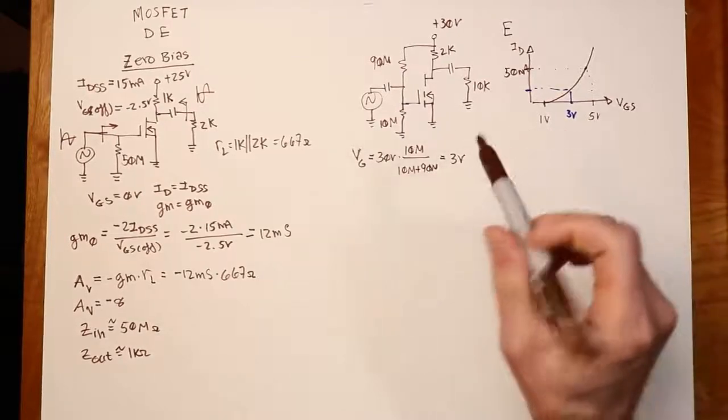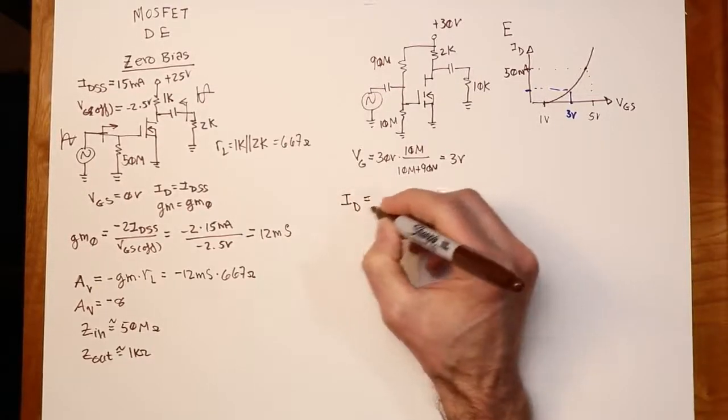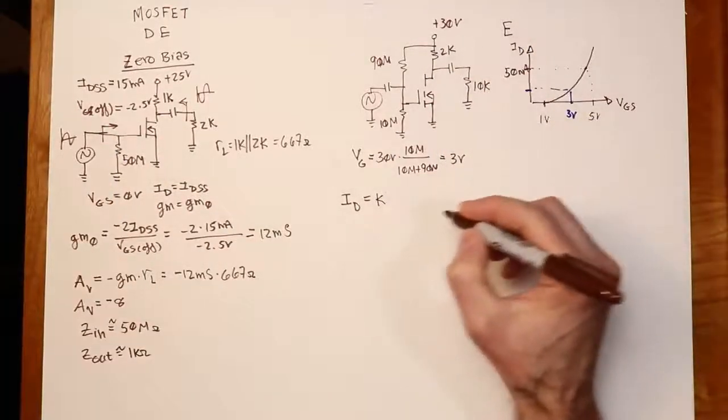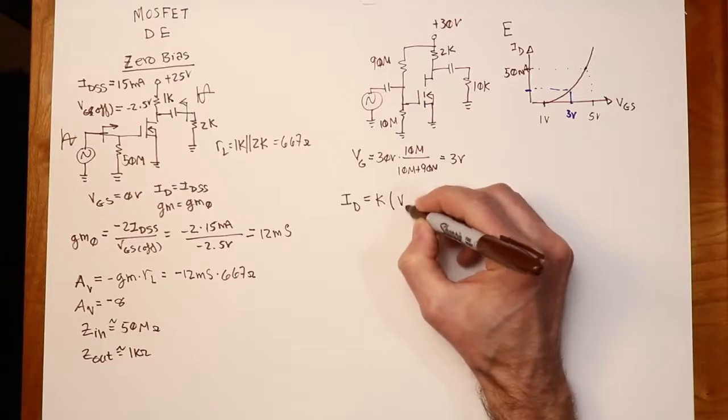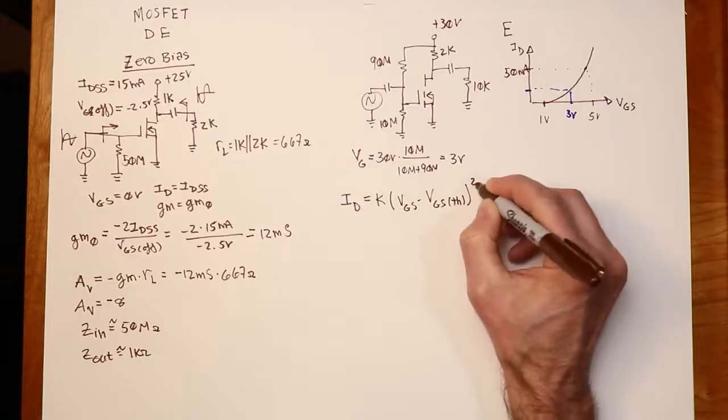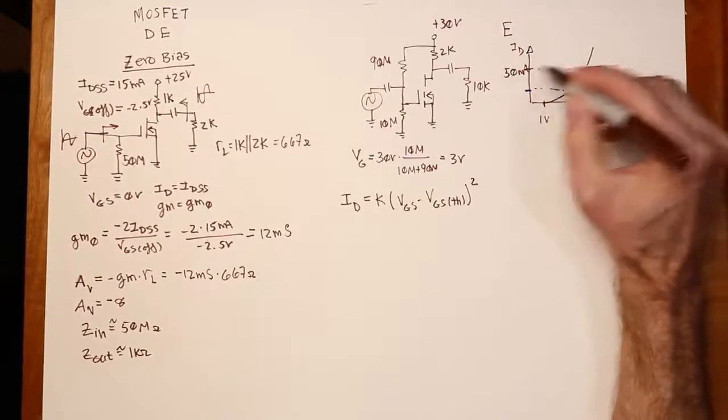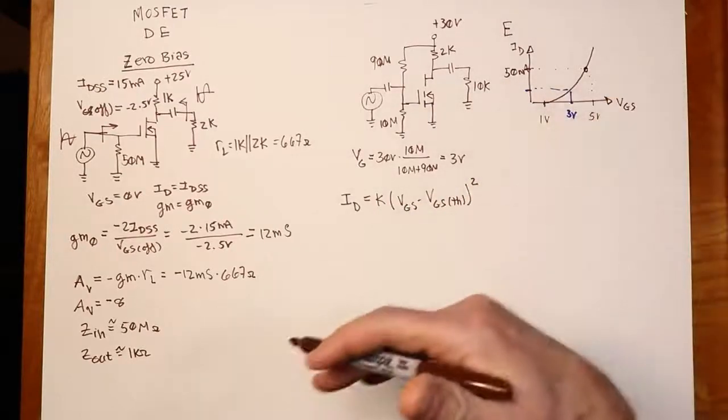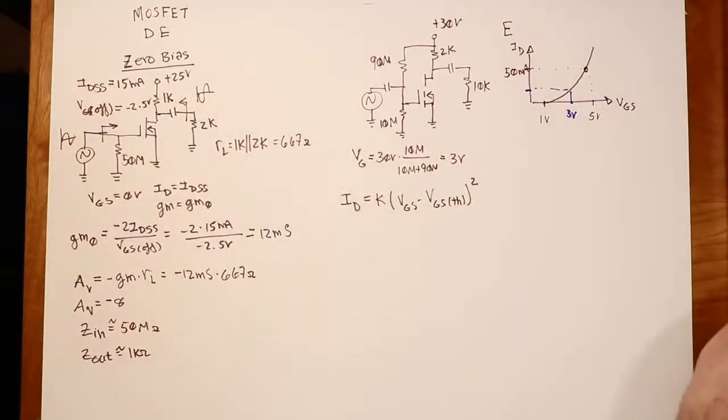Okay. All right. So how do I figure that out? How do I figure out that specific value? Well, remember, we have an equation for ID for the EMOS. And that current is equal to K, which is a factor, kind of like beta on a bipolar, depending on the construction of the device, K times VGS minus VGS threshold quantity squared. So what we're going to do is, since we have this known operation point, this ID on and this VGS on, I can use those to find the value of K for this particular FET. Once I know K, I can find the drain current for any other value of VGS. All right. So I just solve this in terms of K.